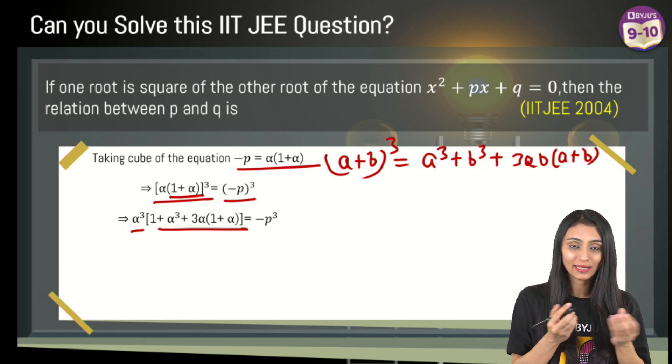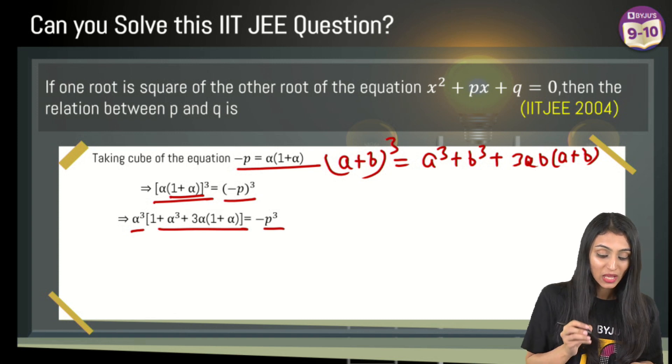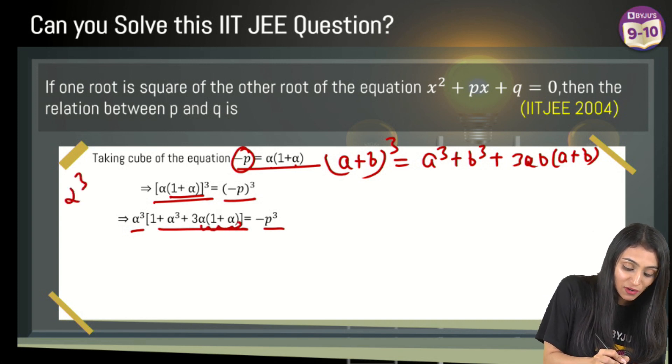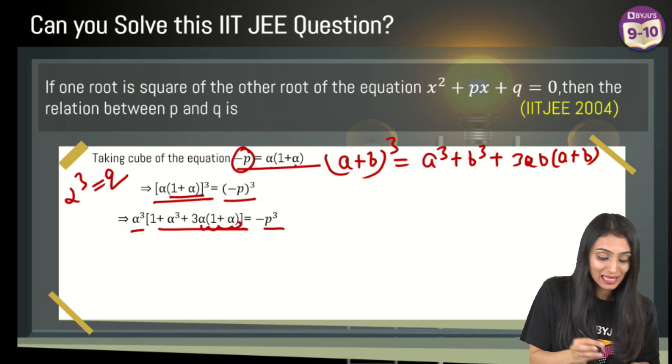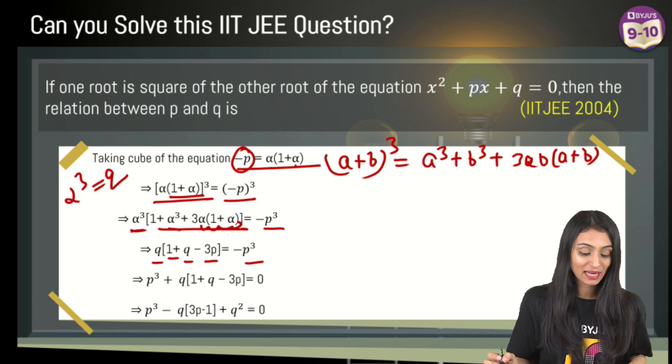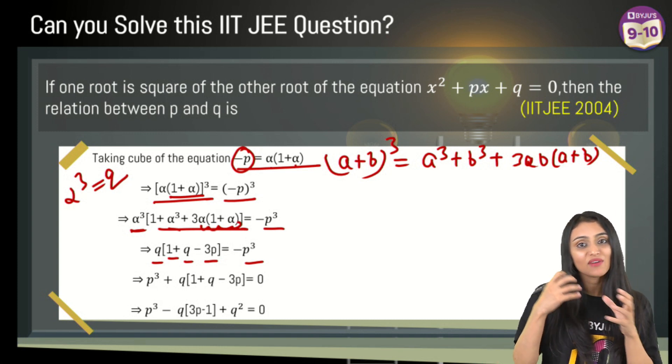We know that alpha times (1 + alpha) is -p, so I'll replace it with -p. And alpha cubed equals q, so I replace alpha cubed with q. This gives us q + 1 + q - 3p = -p³. Taking p³ to the other side: p³ + q(1 + q) - 3pq = 0.